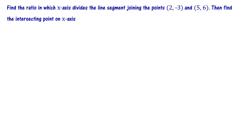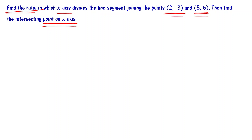Problem 2: Find the ratio in which the x-axis divides the line segment joining the points 2 comma minus 3 and 5 comma 6. Then find the intersecting point on the x-axis. The x-axis is dividing this line segment into two parts — we need to find that ratio and also the coordinates of the intersection point.